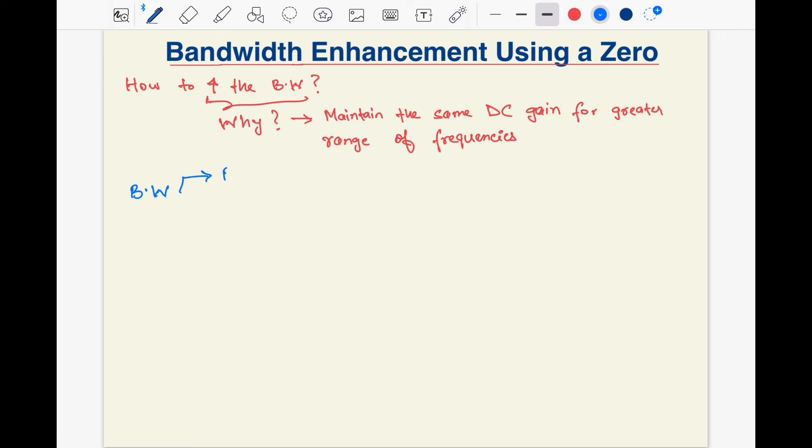We saw that the bandwidth depends upon Rout and Cout. Rout directly affects the DC gain, so let's not think about that. One possibility is that if we can lower Cout by adding a circuit that provides a negative capacitance in the small signal sense, then we could effectively increase the bandwidth. That can indeed be done by using a cross-coupled pair.